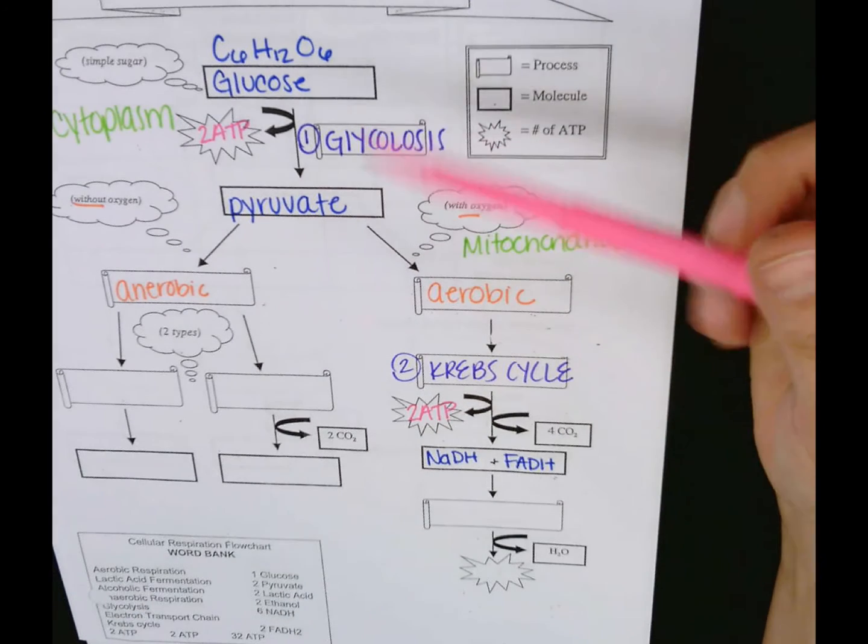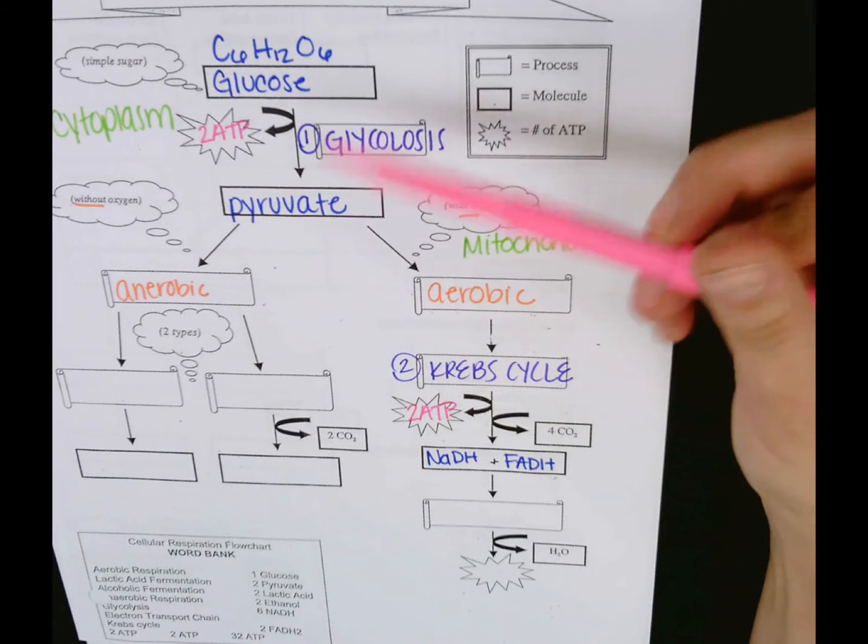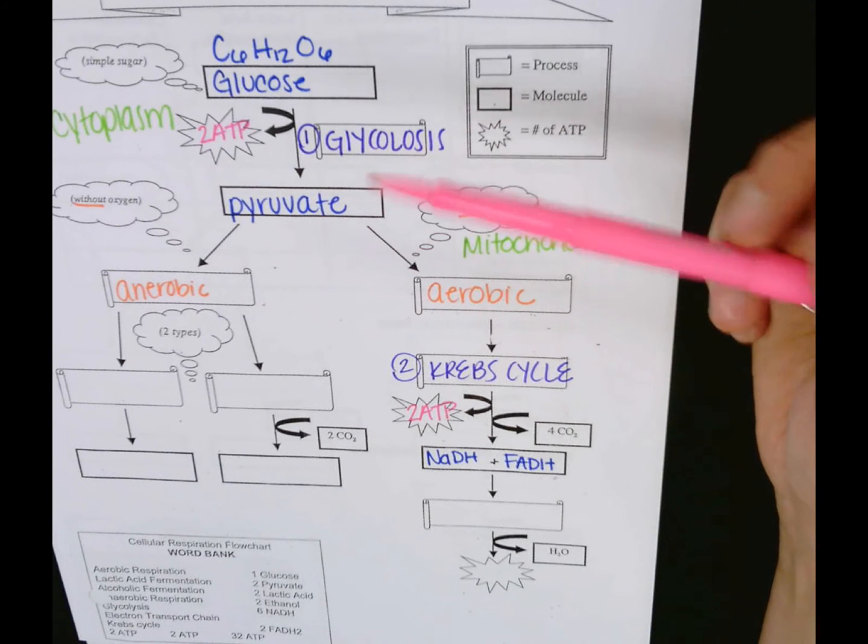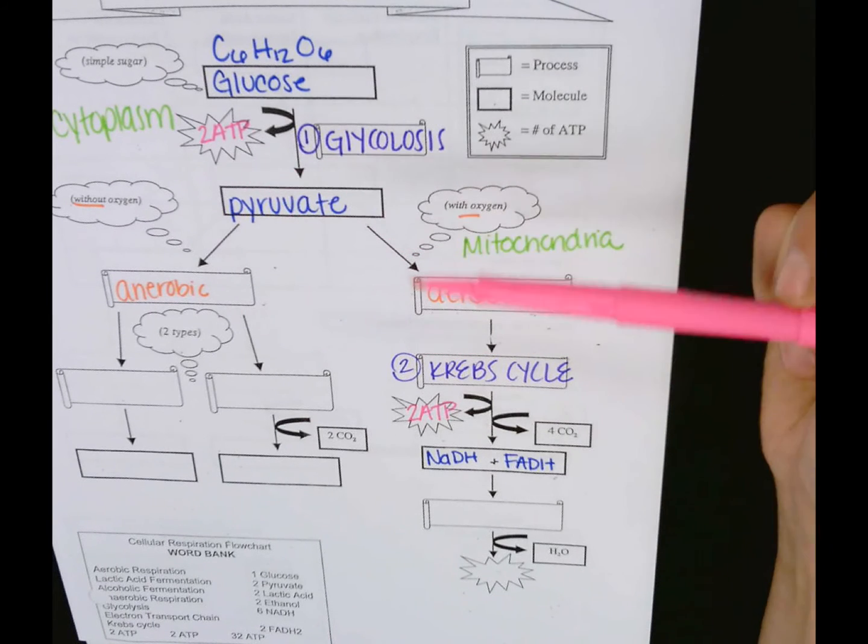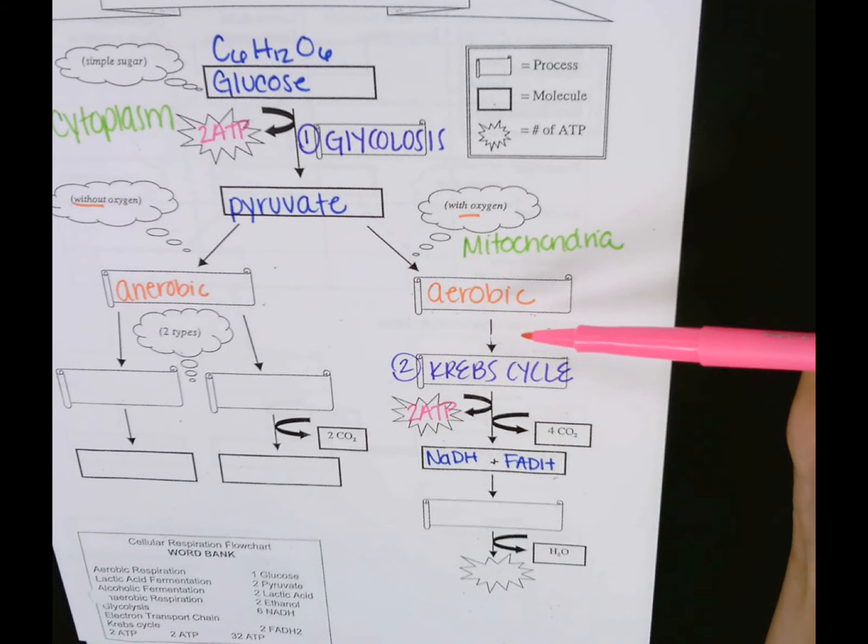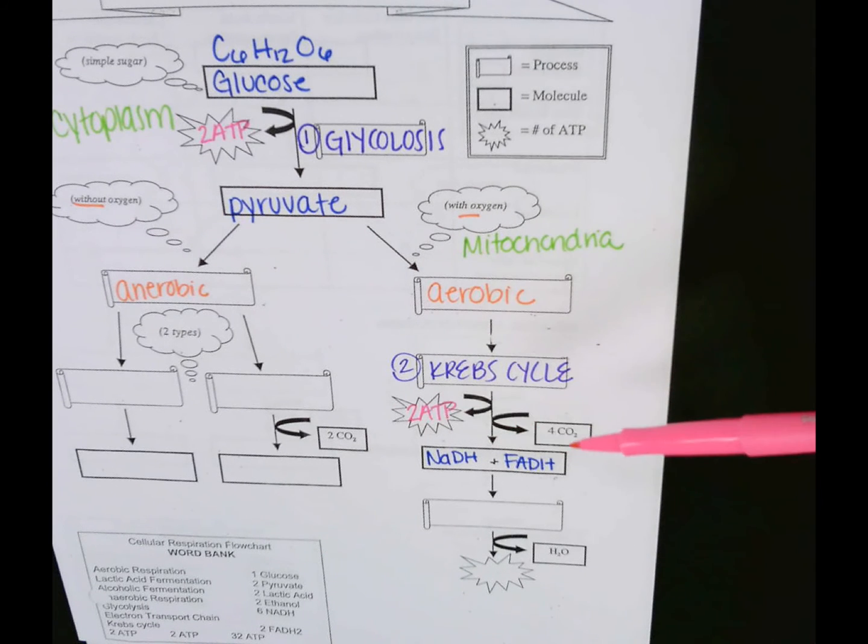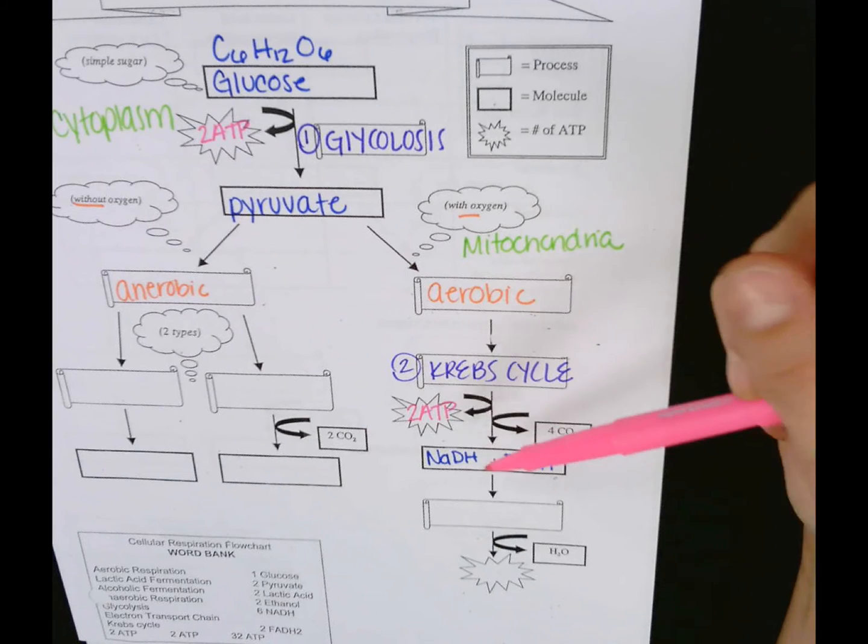So far in glycolysis we made two, and remember this is that step where we have to spend two ATP to make four, so we got a net gain of two ATP. Then because we have oxygen, we can move to the Krebs cycle. We produce two ATP, four CO2, and these two electron carriers.